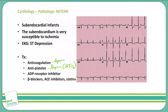We will also use ADP receptor inhibitors like clopidogrel, also known as Plavix. Then we will use beta blockers, ACE inhibitors, and statins to reduce the preload and afterload on the heart as well as address issues with hyperlipidemia. We can symptomatically control the patient with nitroglycerin and morphine, but this does not reduce risk of mortality.